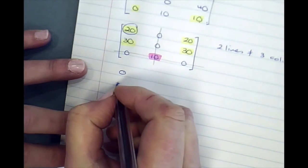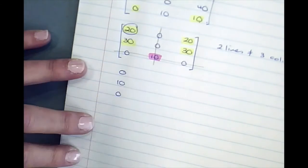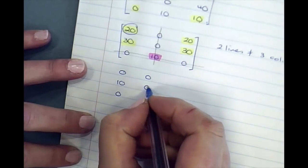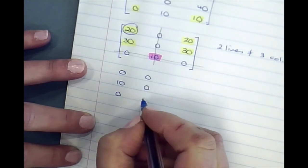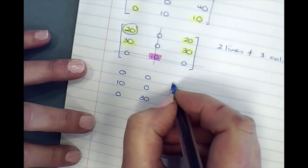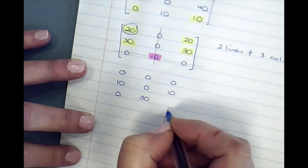So that will be 0, 10, that remains unchanged. Unchanged, unchanged, 10 plus 20 is 30, 0, 10, unchanged.